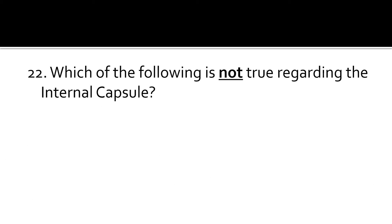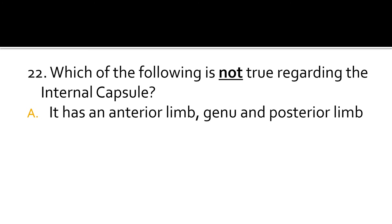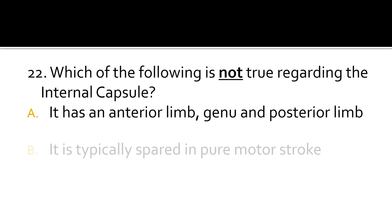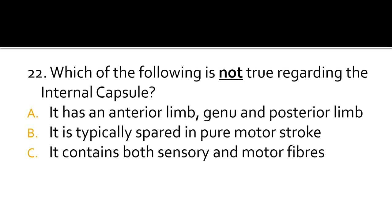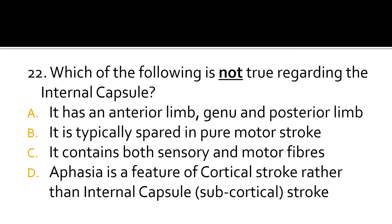Question 22. Which of the following is not true regarding the internal capsule? It has an anterior limb, genu, and posterior limb. It is typically spared in pure motor stroke. It contains both sensory and motor fibers. Facial weakness is a feature of cortical stroke rather than internal capsule subcortical stroke. The correct answer is B.